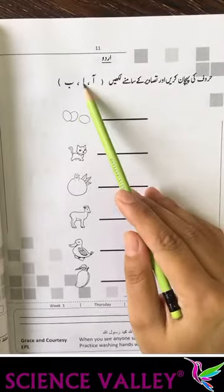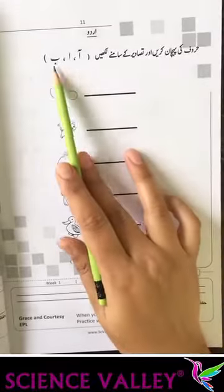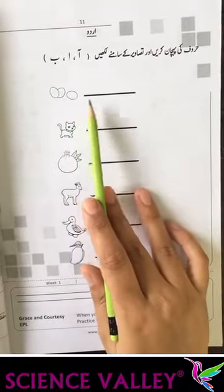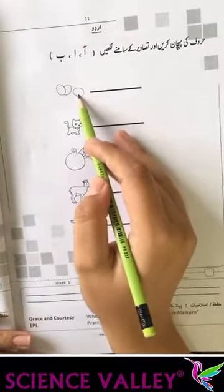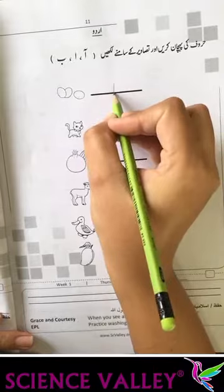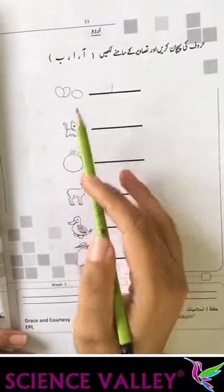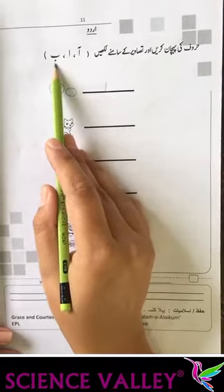Now open page 11. Let us know how to pronounce it and write it. Alimada, alif, be. Now we will write in three paragraphs. Andra kis se bantah hai? Alif se. Billi kis se bantah hai? Alif se bantah hai, be se.